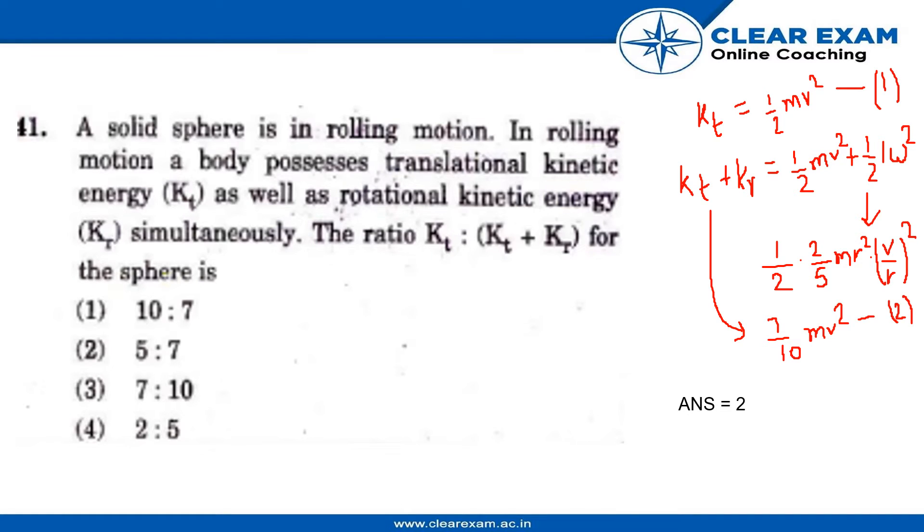The given question is: a solid sphere is in rolling motion. In rolling motion, a body possesses translational kinetic energy as well as rotational kinetic energy simultaneously. So we have to find this ratio for this sphere.